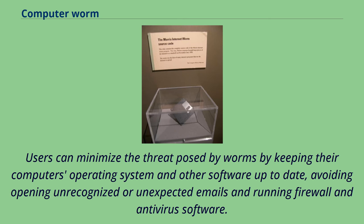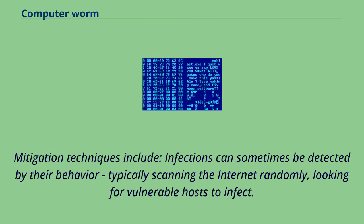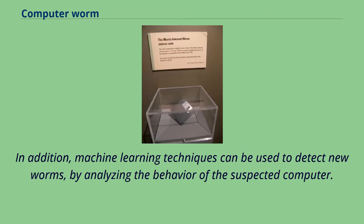Mitigation techniques include: infections can sometimes be detected by their behavior, typically scanning the internet randomly, looking for vulnerable hosts to infect. In addition, machine learning techniques can be used to detect new worms by analyzing the behavior of the suspected computer.